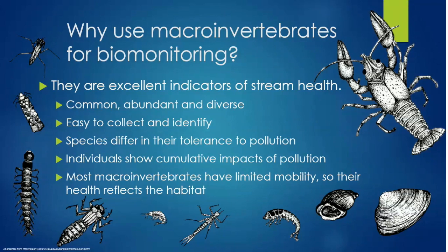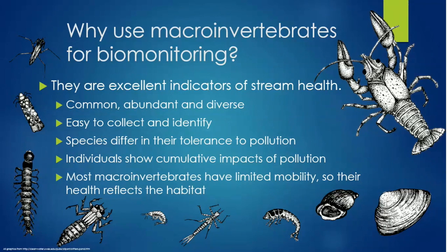Macroinvertebrates are an excellent indicator of stream health. They are common, abundant, and diverse in streams, so researchers can easily find them. Macroinvertebrates are easy to catch, collect, and identify, and the species have different tolerances to pollution. While some species can tolerate pollution more than others, all species show cumulative impacts of pollution, meaning that pollution effects build over time.